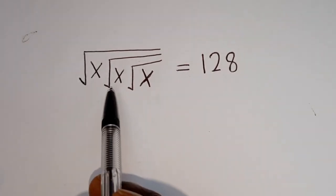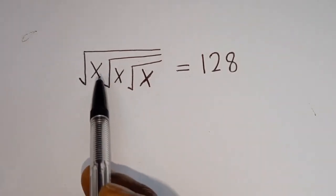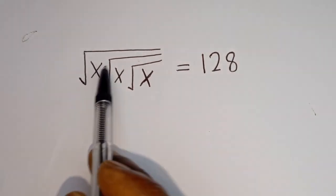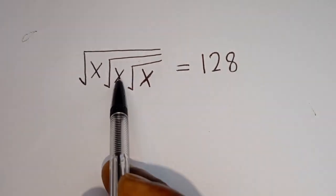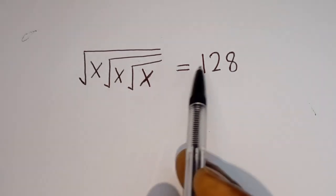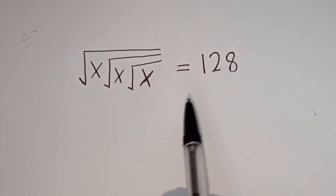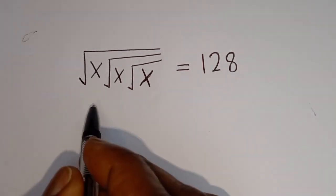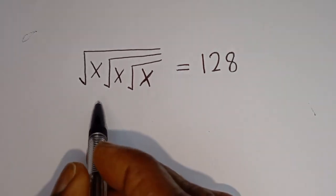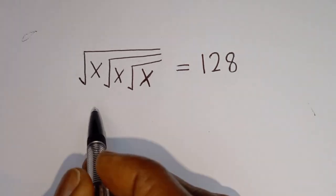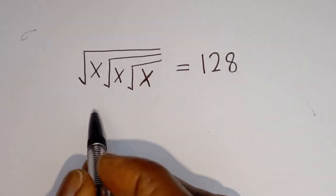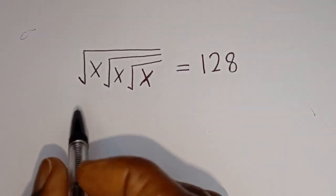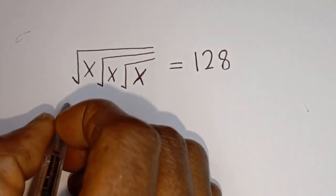Hello. How to solve for s in this equation: square root of s, square root of s, and square root of s is equal to 128. We're going to use two methods in this situation, but at the end of the day we're going to find out which method is the best solution.